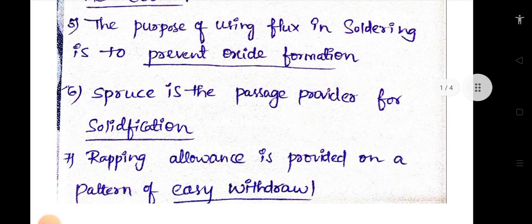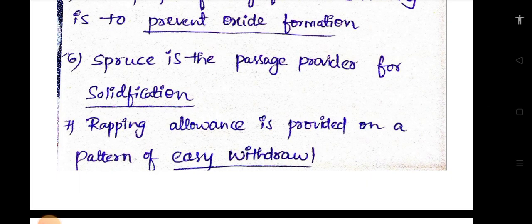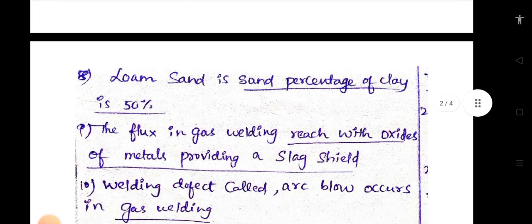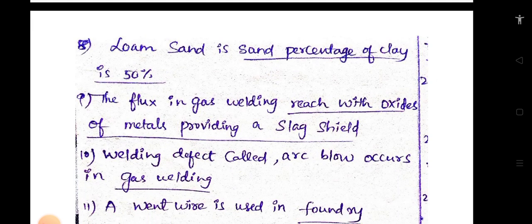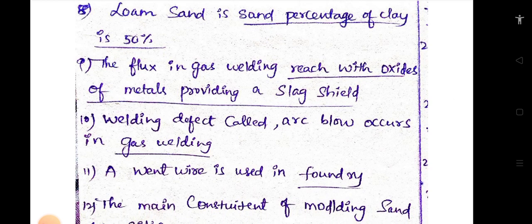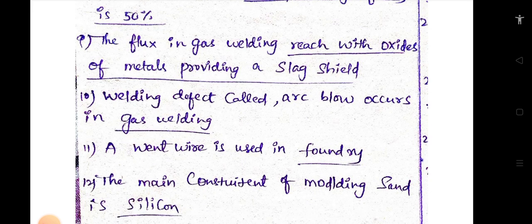Sprue is the passage provided for solidification. Rapping allowance is provided on a pattern for easy withdrawal. Loam sand is sand percentage of clay is 50 percent. The flux in gas welding reacts with oxides of metals providing a slag shield. Welding defect called arc blow occurs in gas welding.